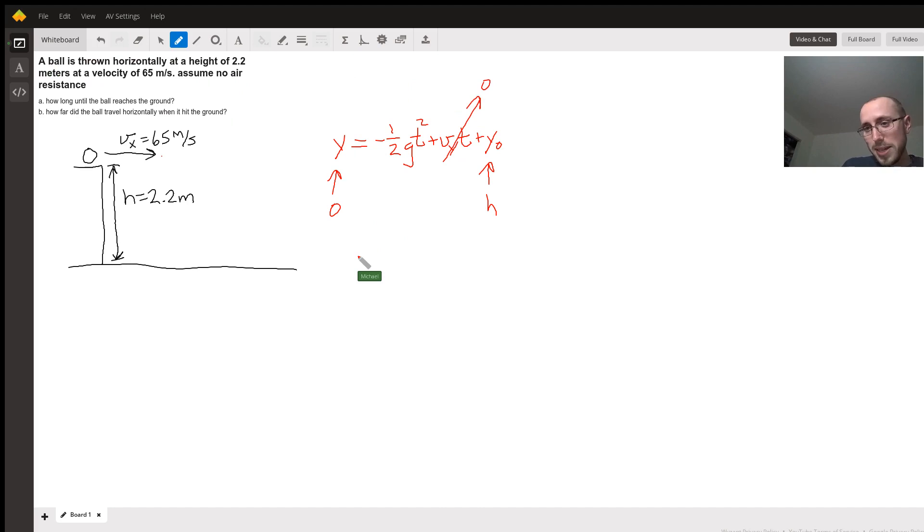And so what do we get when we make all these adjustments? We get zero equals minus 1/2 g t squared plus h. Okay. And then after slogging through all of the algebra, we're left with t is equal to plus minus the square root of 2h over g.